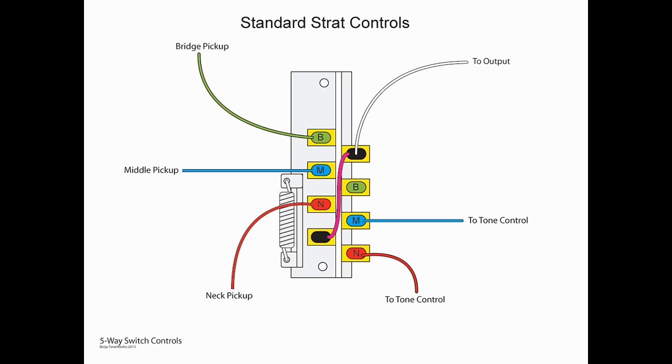And so now what we're looking at is a standard Strat control switch. Those of you who have Strats and have opened them up, this is what you would typically see. The left side is your input portion here. We have our jumper going to the right side. Top lug is our output. And then we've got tone control going to the middle and to the neck. So this is our standard Strat configuration.